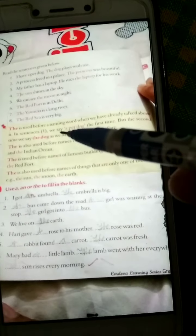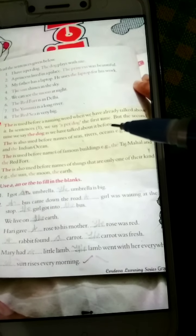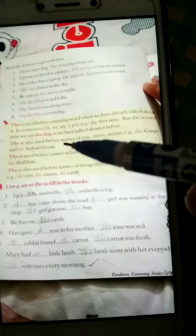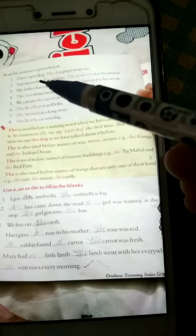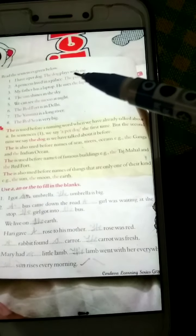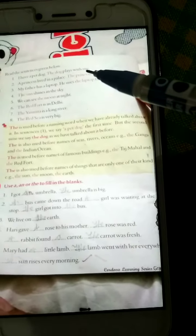So 'the' is used for a naming word when we have already talked about it. In a sentence we say, look here, I have a pet dog. The dog plays with me. Here I am talking about my pet dog.